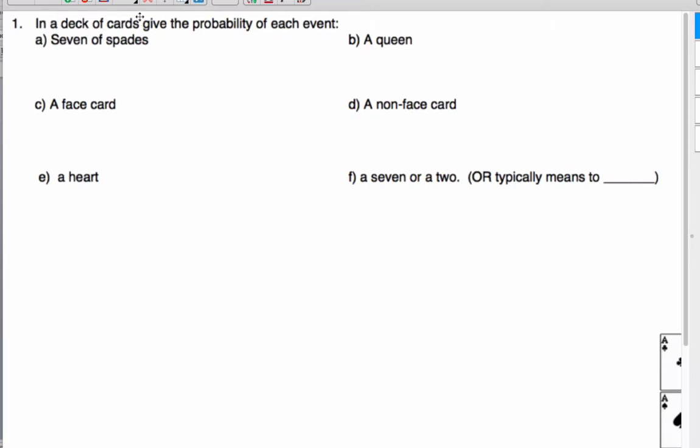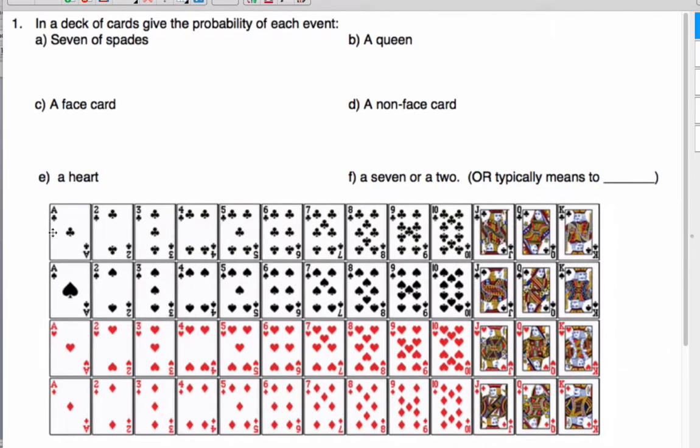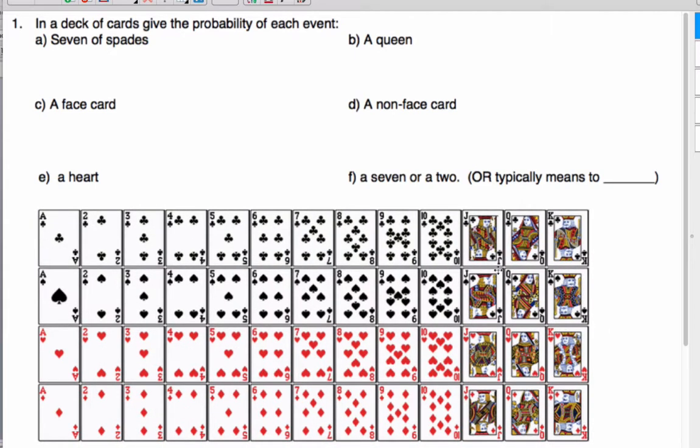All right. So those are some definitions for us to think about. All right. So now, in a deck of seven cards, or in a deck of cards, give it probably each event. Well, once upon a time, everyone knew cards. But in case you don't know cards, here is what a deck of cards looks like. There are ace to king and four different suits. Clubs, spades, hearts, and diamonds. So there's 13 of each suit. Each suit has all the same kind of numbers. And there's four of them. So in total, there's 52 cards.